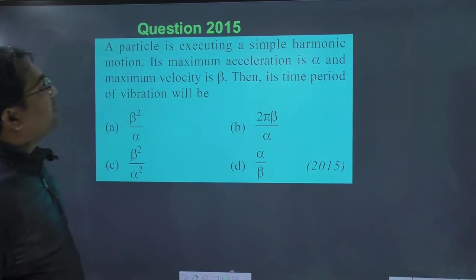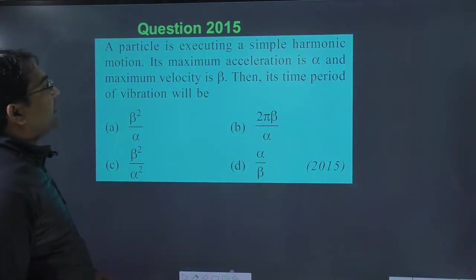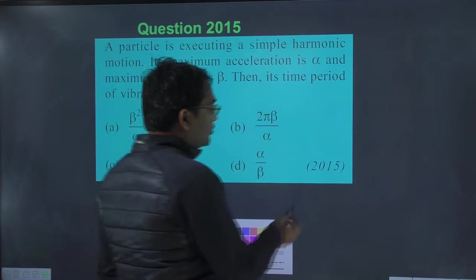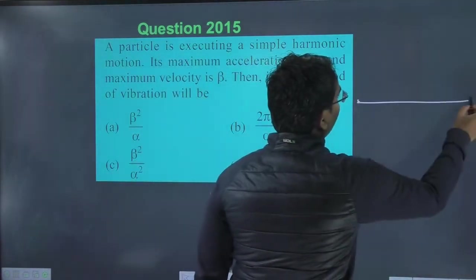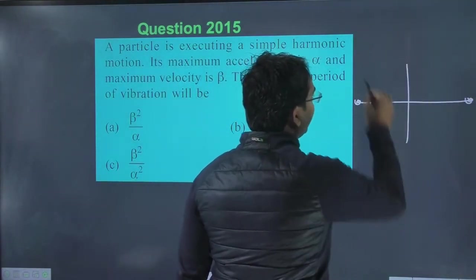So, a particle executes simple harmonic motion. Maximum acceleration is alpha and maximum velocity is beta. Then, time period of vibration. Mujhe to simple harmonic motion bohot acha lagta hai. To aap ko bhi acha lagna chahiye. It is the very good chapter.